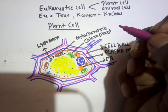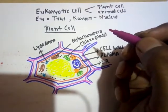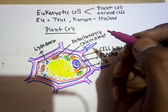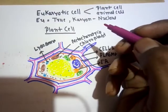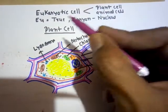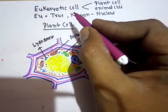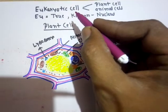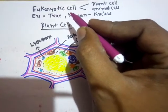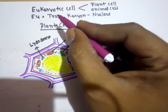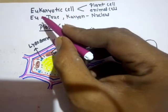Good morning students, I am Anshul Sharma, your biology teacher. In this video we are going to discuss the second type of cell, called the eukaryotic cell. You know the first type of cell, the prokaryotic cell, we have discussed in the previous video.